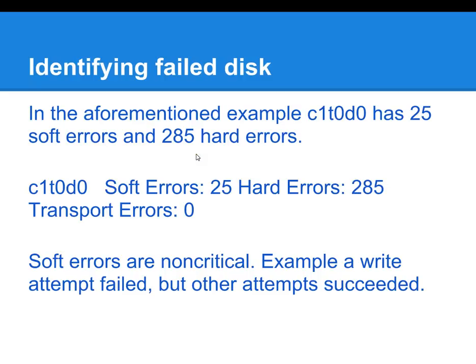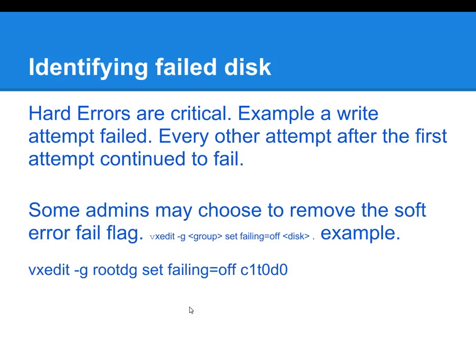Soft errors are basically writes where a write was attempted to a disk, it may have failed once, but the subsequent tries were successful. Hard errors are critical errors. These are situations where a write was attempted on a disk, it failed, and all subsequent write attempts to that disk fail.